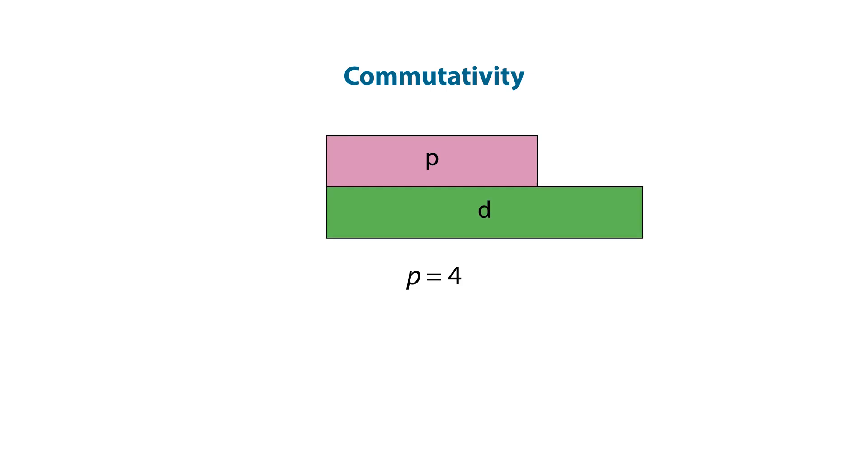When students are confident using Cuisenaire rods, you may wish to assign values to the rods to explore commutativity. You need to assign the rods values equal to their lengths. For example, pink equals 4 and dark green equals 6.